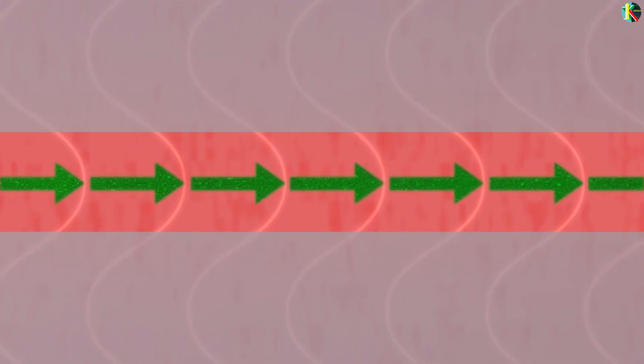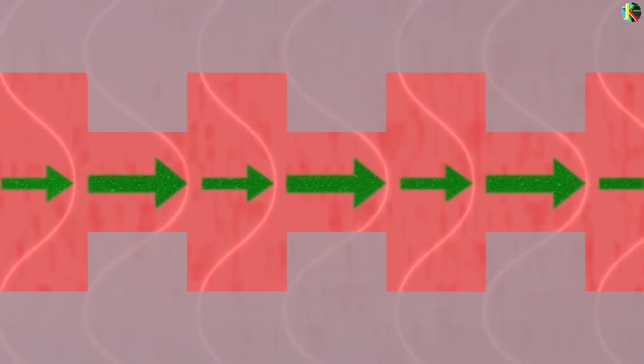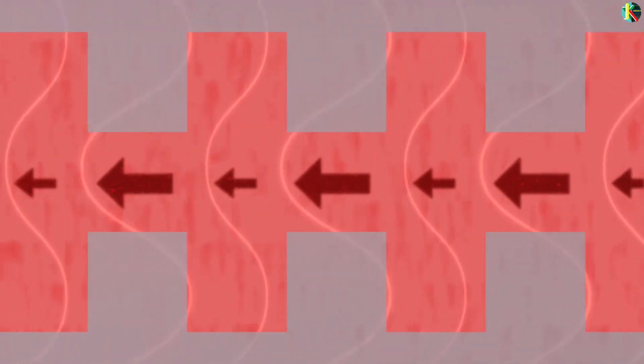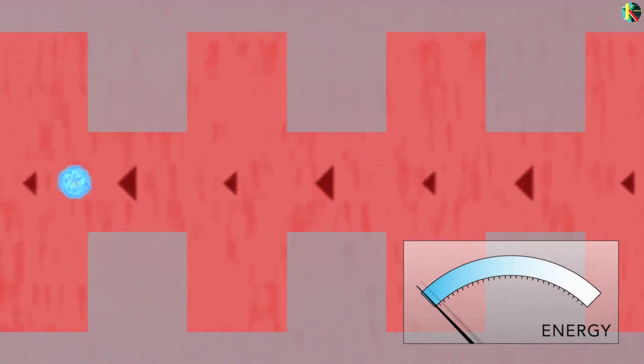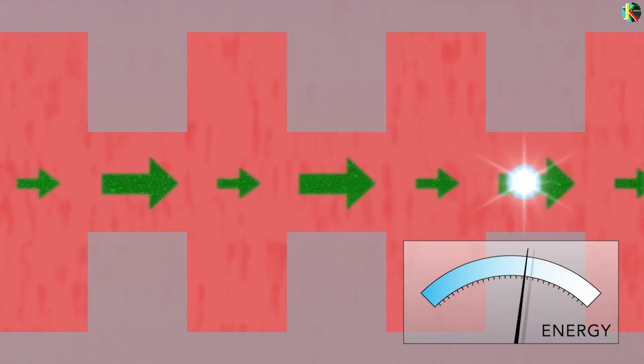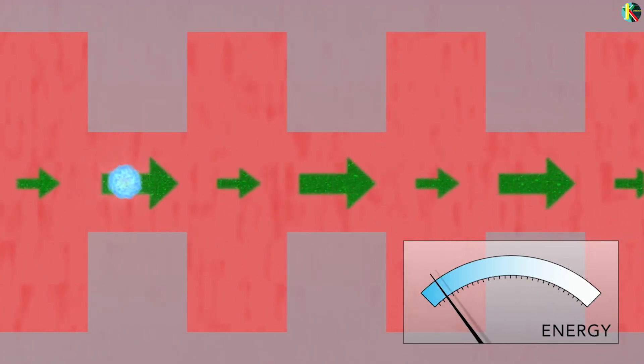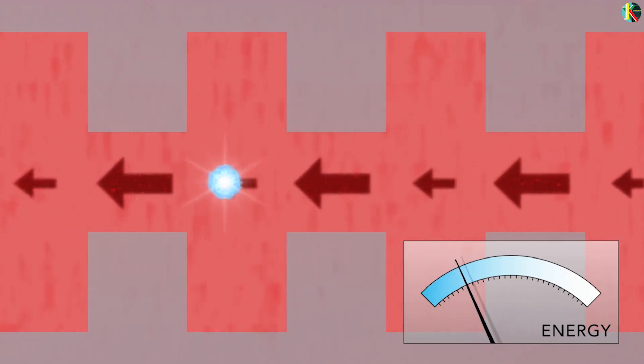The team achieved this by modifying the channel where they created a nanoscale pattern of ridges and gaps on the top and bottom of the channel. This structure increases the laser light's electric field between the ridges and reduces it within the gaps. Electrons traveling through the patterned channel now receive a big energy boost from the electric fields between the ridges and lose only a little energy as they pass through the smaller gap fields. The net result is a significant energy gain for those electrons that are perfectly timed with the laser light waves.